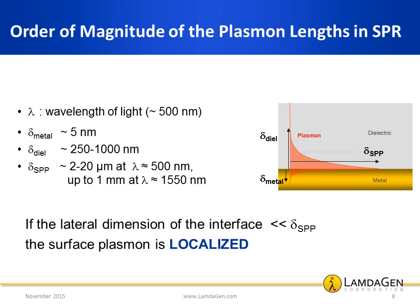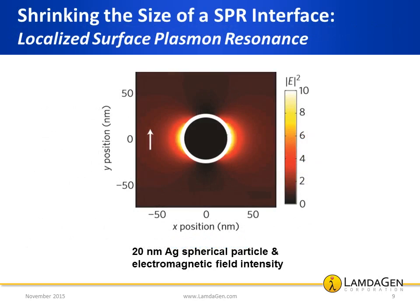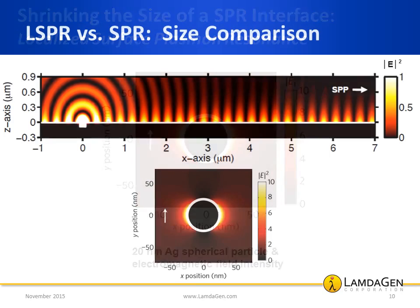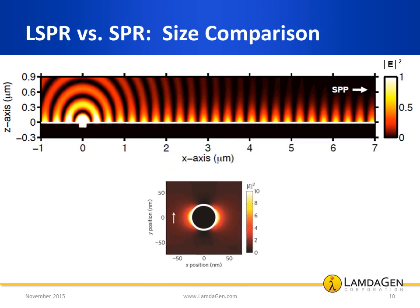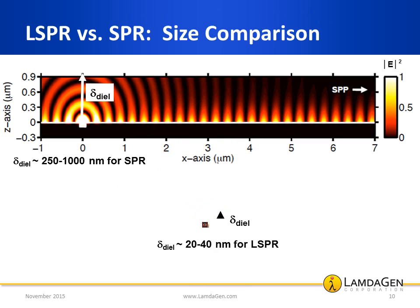If the lateral dimension of the interface becomes much smaller than the plasmon propagation length, the surface plasmon is localized. For example, in the case of a localized surface plasmon for a 20 nanometer silver particle, there is no traveling wave. There is a large increase of the electromagnetic field close to the particle surface, but it extends only a small distance out — hence, the surface plasmon is localized. If we were to scale both images to their relative size, it is immediately apparent that the evanescent field of localized SPR is much shorter than the evanescent field of regular SPR.